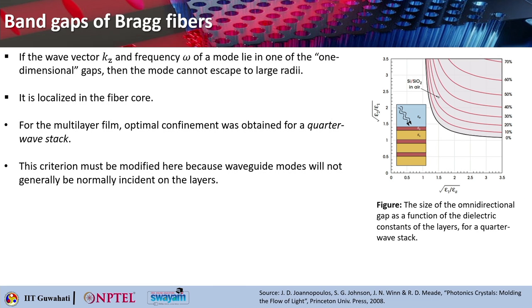As with the planar mirror, the leakage rate from the core to the exterior decreases exponentially with the number of layers. The cylindrical case is called Bragg fiber by A et al, published in 1978, and the spherical case was dubbed as Bragg onion, which we briefly discussed in one of our previous lectures, done in 2003 by Shoe's group.